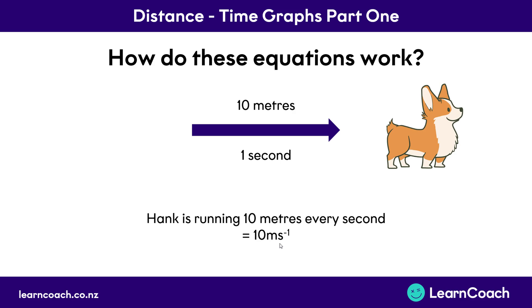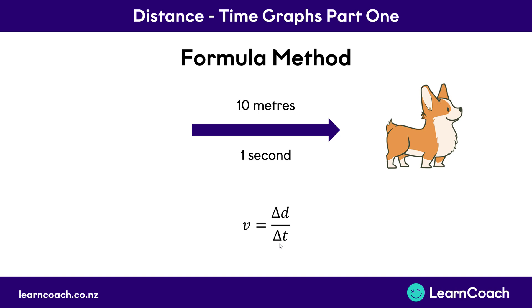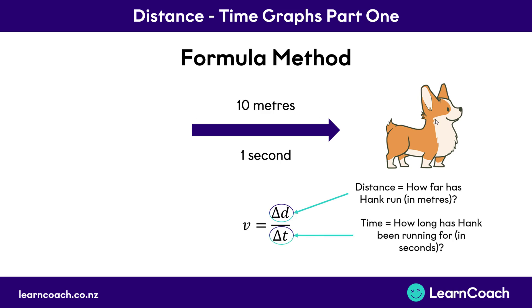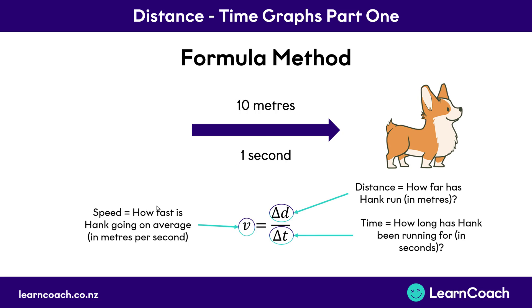There's a relationship between speed, distance and time, and that relationship is: V (speed) equals distance over time. Those little triangles simply mean 'change in' but it's not important at this level. All this equation is saying is: how far has Hank run from where he started to where he is now, and how long has he been running for — from which we can work out how fast he is going in metres per second.